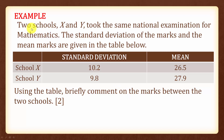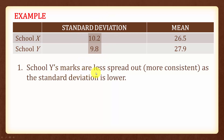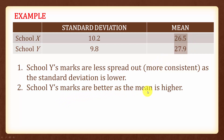In this example, we have two schools X and Y which took the same national examination for mathematics. The standard deviation of the marks and the mean marks are given in the table. School X has a standard deviation of 10.2 marks and a mean of 26.5 marks, whereas school Y has a standard deviation of 9.8 marks and a mean of 27.9 marks. We are asked to briefly comment on the marks between the two schools. Comparing the standard deviation, school Y's marks are less spread out because the standard deviation is lower — less spread out also means more consistent.